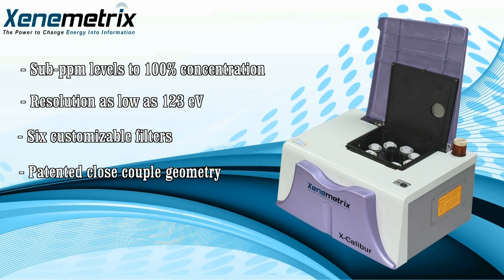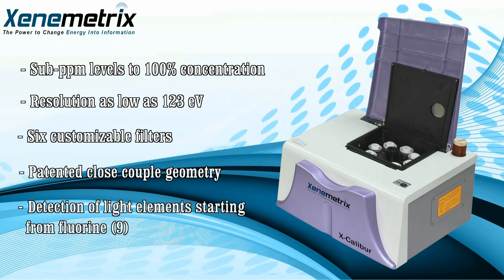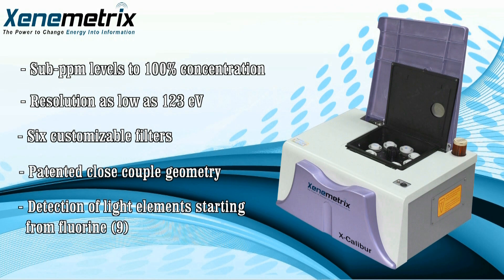The integrated ability to change the chamber's air environment to vacuum or helium enables detection of light elements starting from fluorine. All of these give the Excalibur the ability to analyze very complicated materials in a variety of matrices.